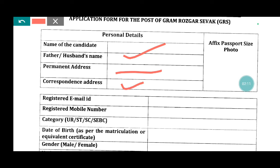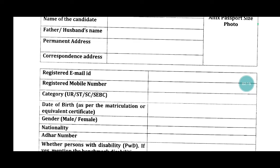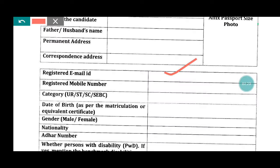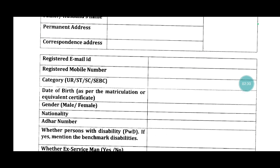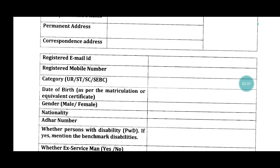Fill up the pin code — this is all filled up. Correspondence address — fill up. Register email ID, active email ID. Register active mobile number, category, caste: UR, SC, ST, SEBC. Date of birth, 10th certificate.